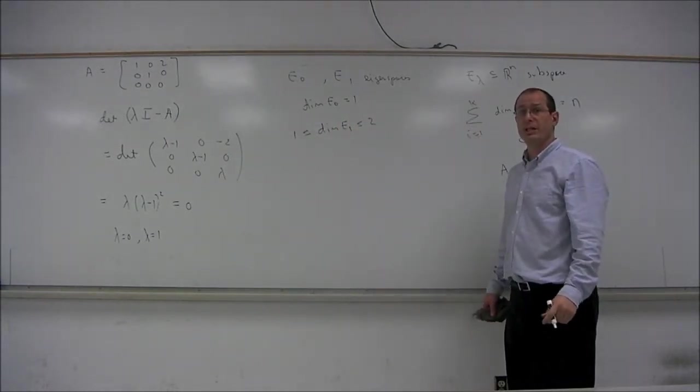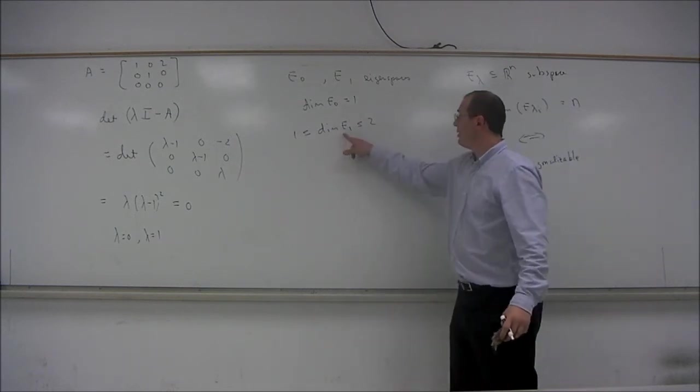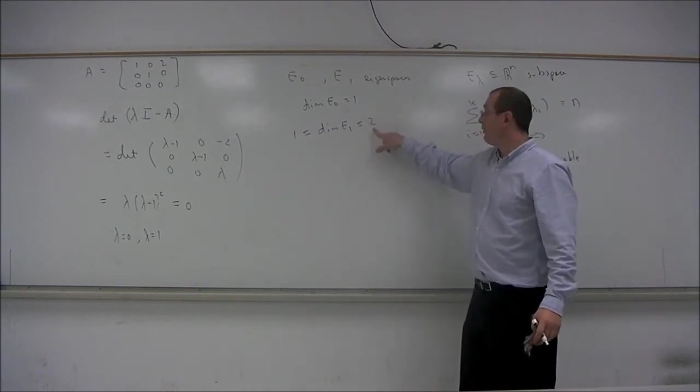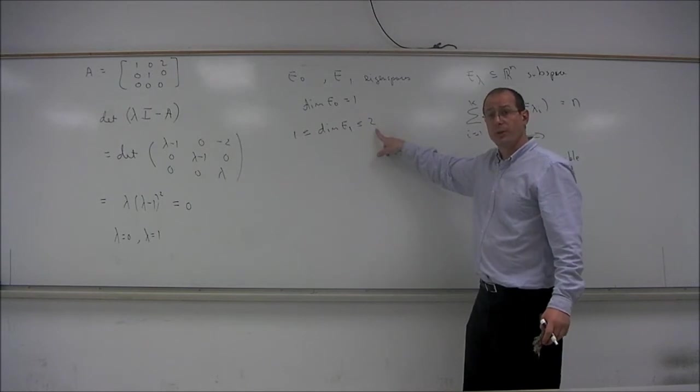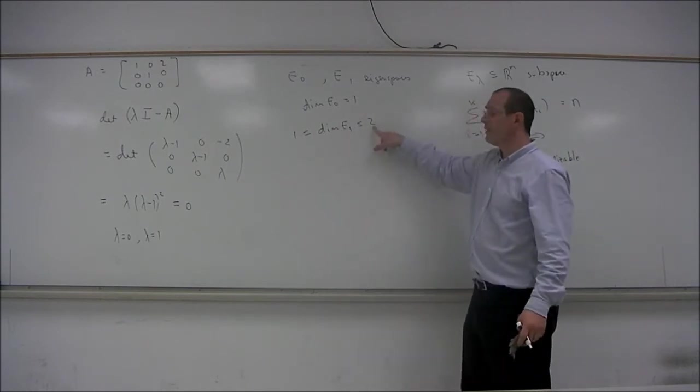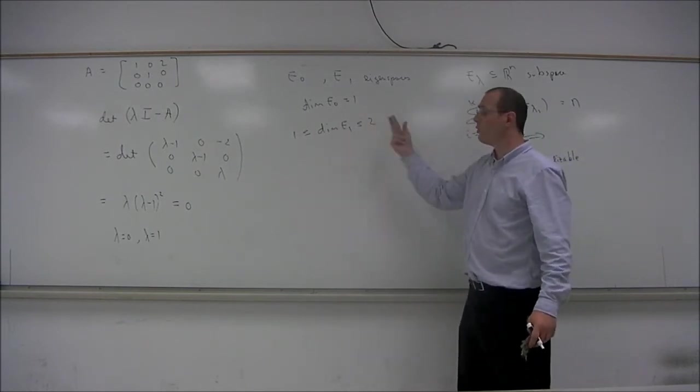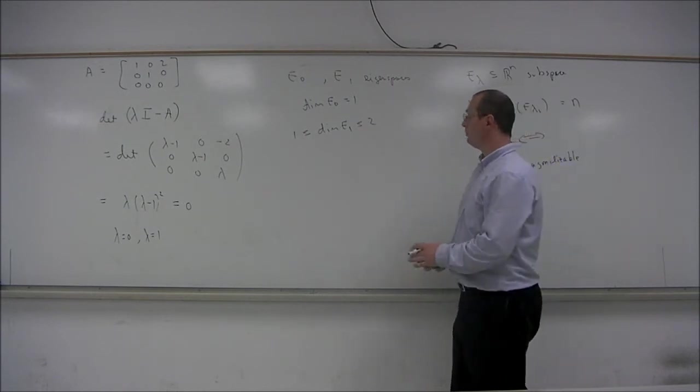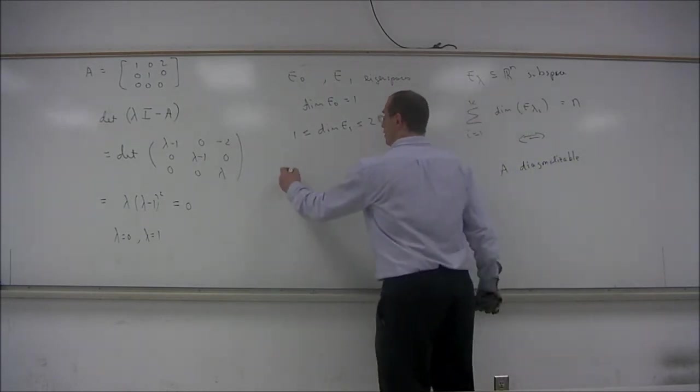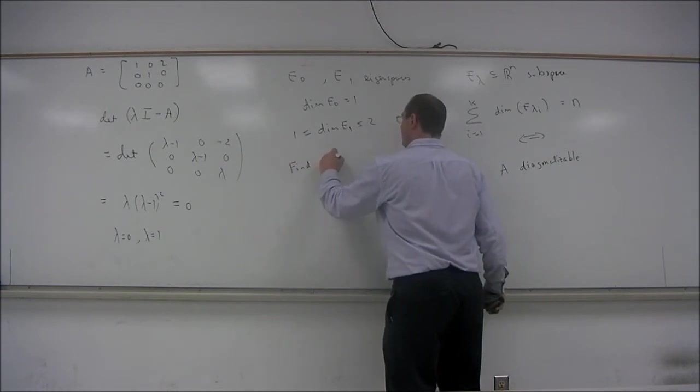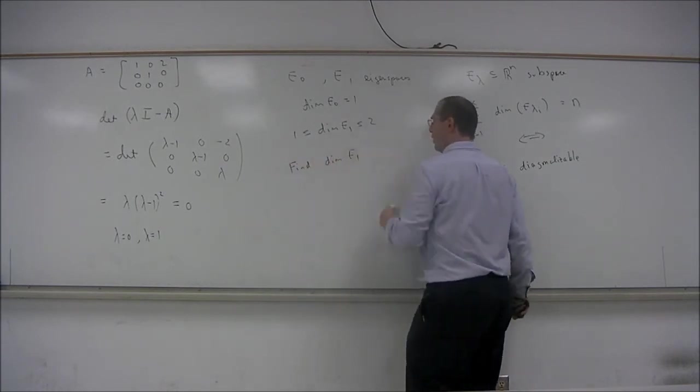the dimension of E1 is either 1 or 2. In order for the matrix to be diagonalizable, the dimension of E1 would need to be the maximum possible here, 2. So we have to check the dimension of E1. Is it 1 or is it 2?